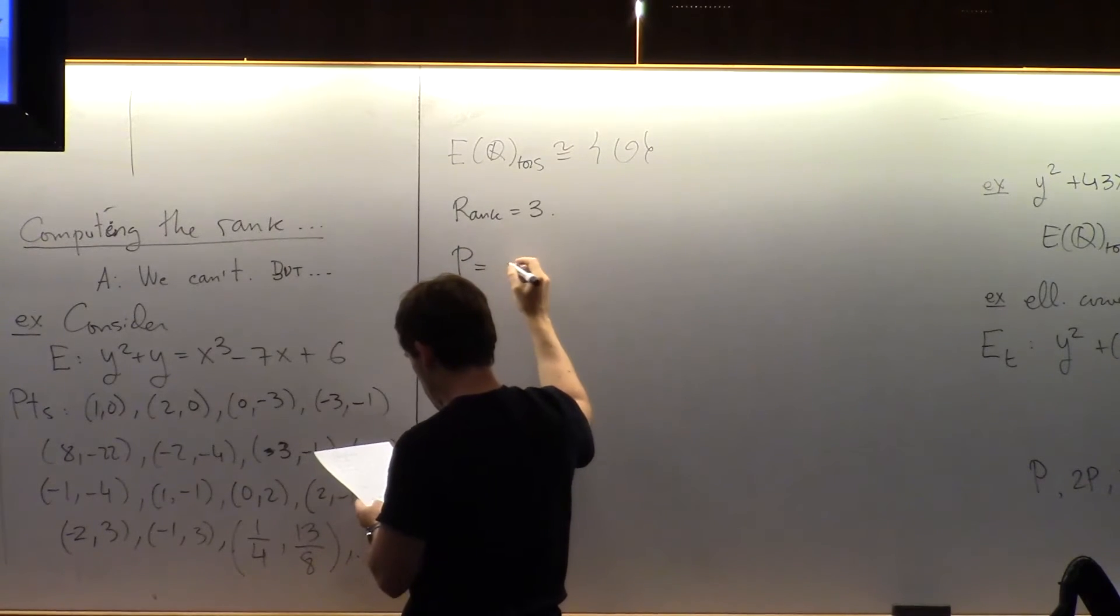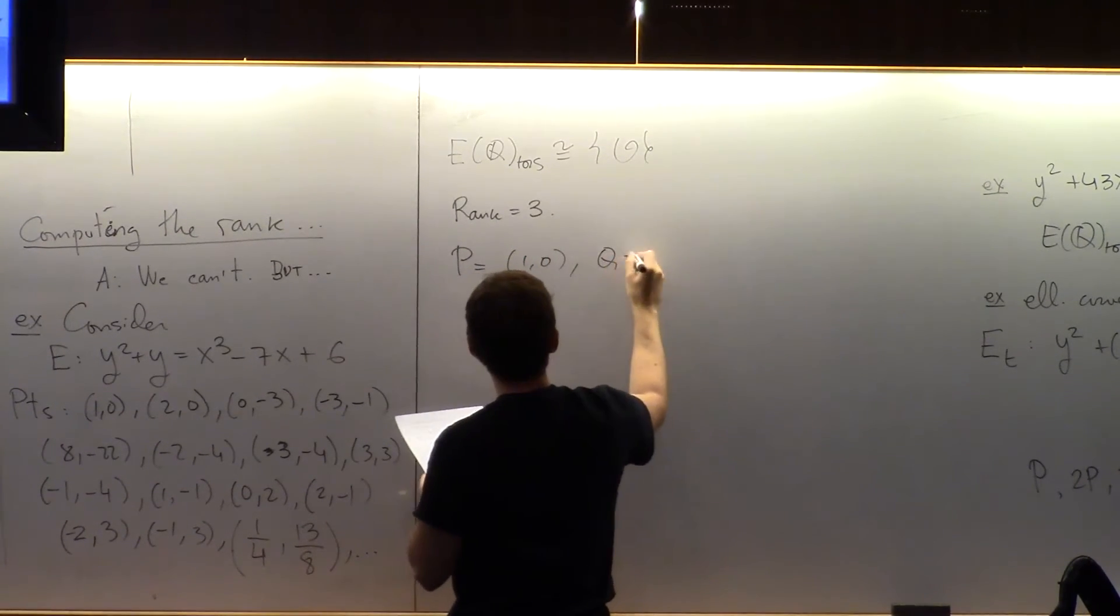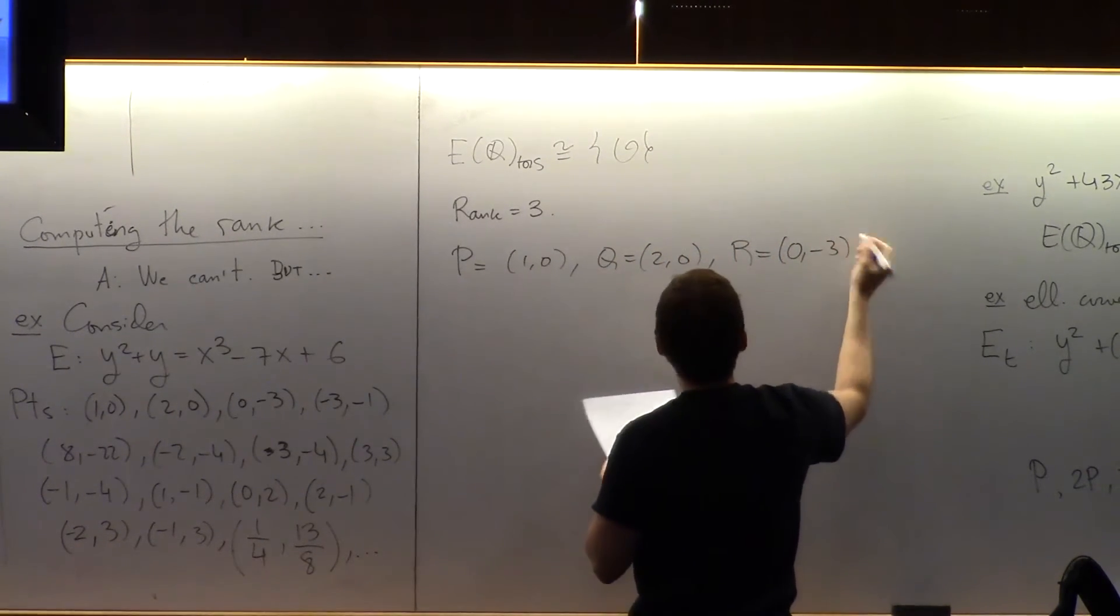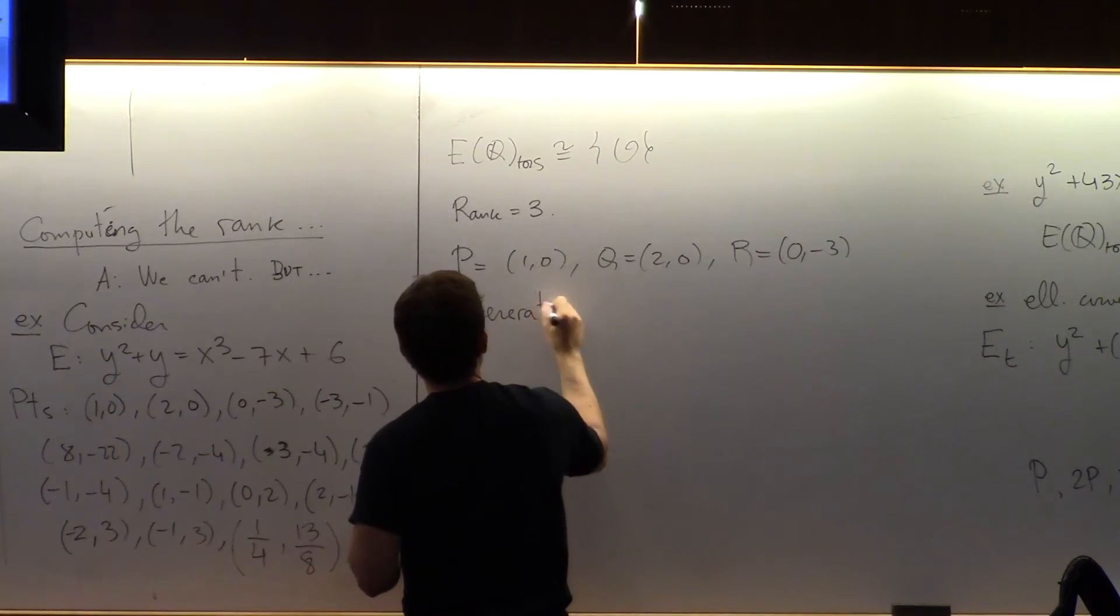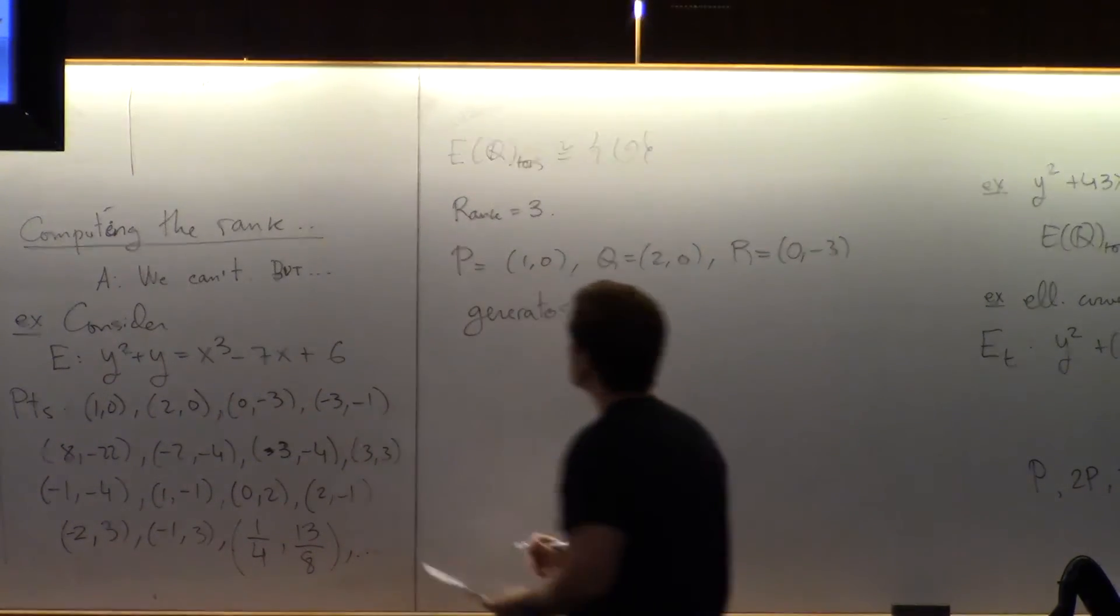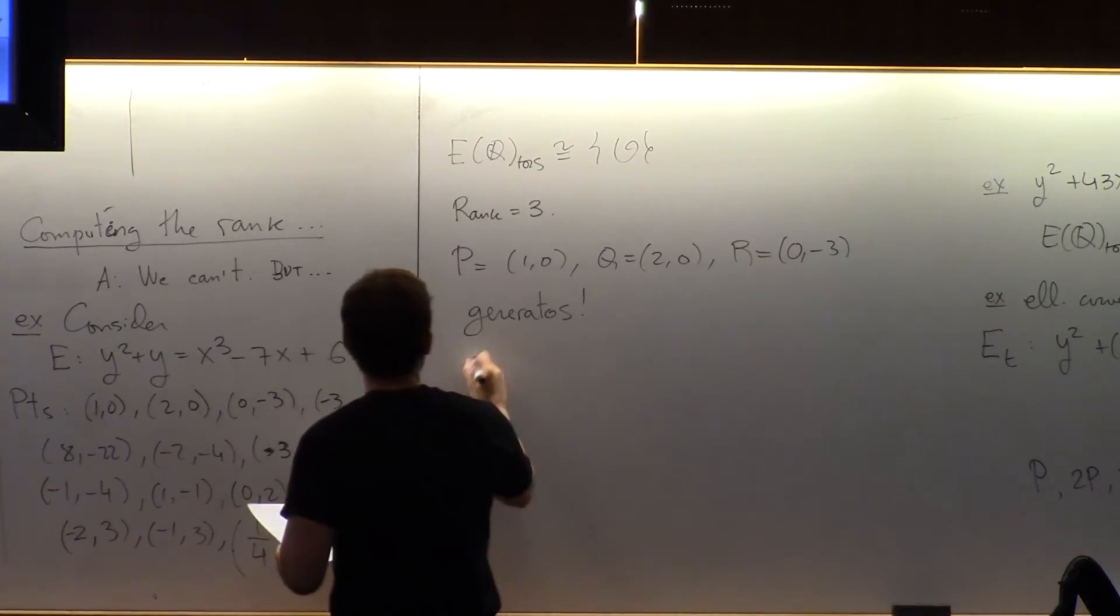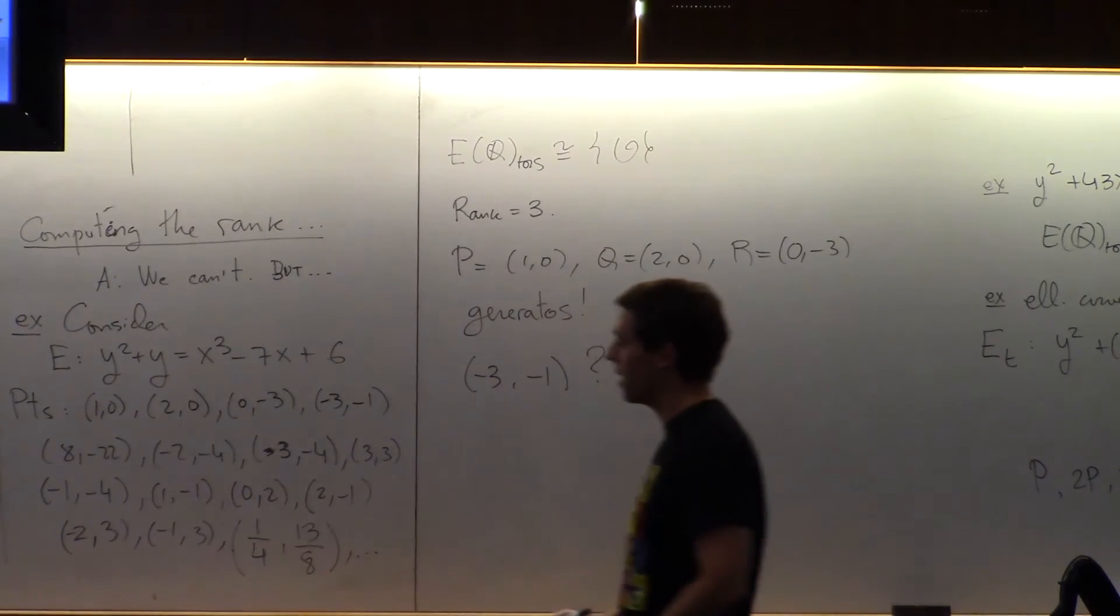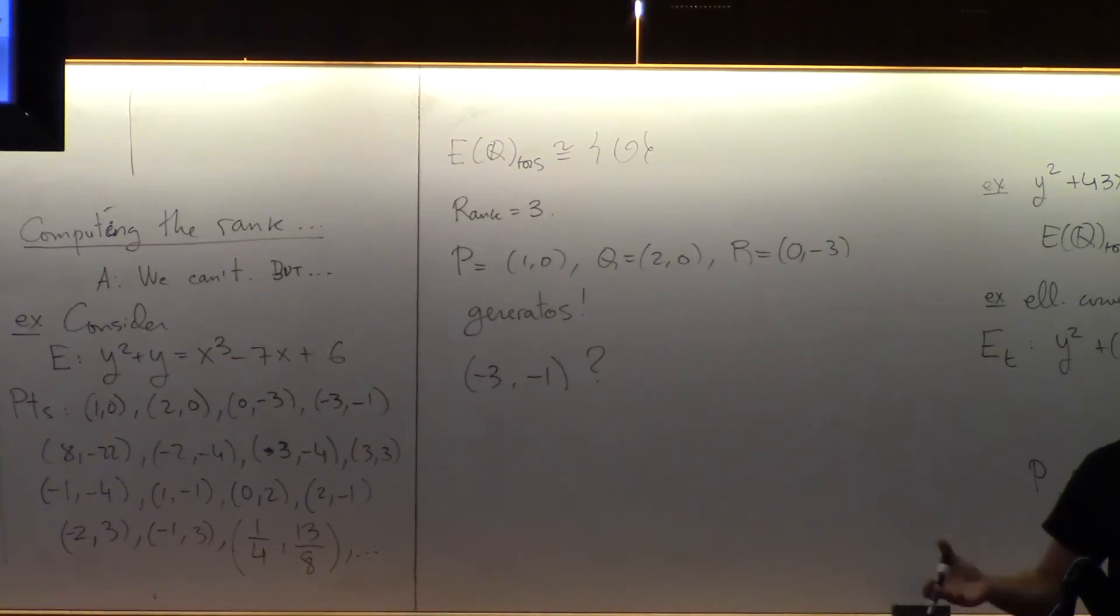So it turns out that P equals (1,0), Q equals (2,0), and R equals (0,-3) for instance. These are generators. So that leaves a question. What on earth is (-3,-1)? Who is that guy? There must be some addition that adds up to that. Which one is it?